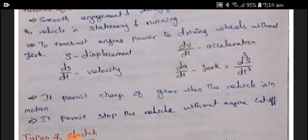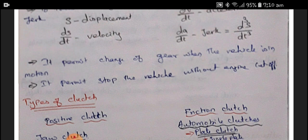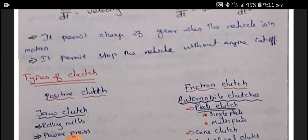The function of clutch continues: it permits change of gear when the vehicle is in motion, and it permits stopping the vehicle without switching off the engine. Without switching off the engine, we can stop the vehicle anywhere as well as move the vehicle at different speeds, different load conditions, and different torques. All these things can be done by means of clutch and gearboxes. The clutch function is to smoothly engage and disengage as per the load and road condition requirement.